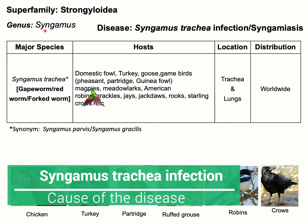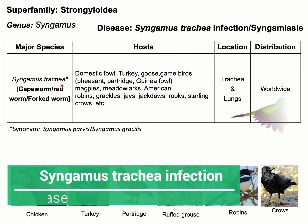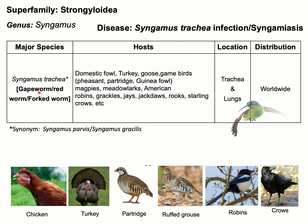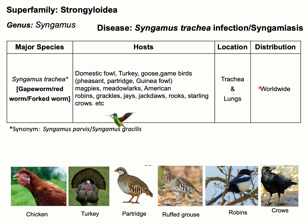Superfamily Syngyloidea, genus Syngamus. The name of the parasite is Syngamus trachea. This parasite is also known as gapeworm, red worm, or fork worm. It most commonly affects a wide range of domestic and wild birds, such as domestic fowl, turkey, goose, magpie, jays, crows, etc. The location of this parasite is in the trachea and lungs. The distribution of this parasite is worldwide.